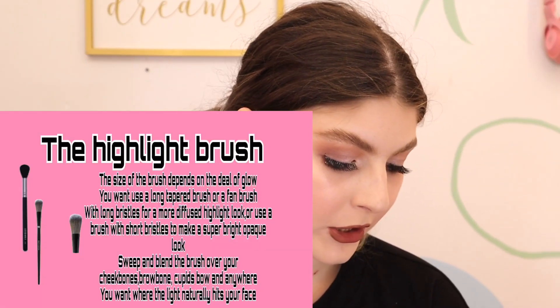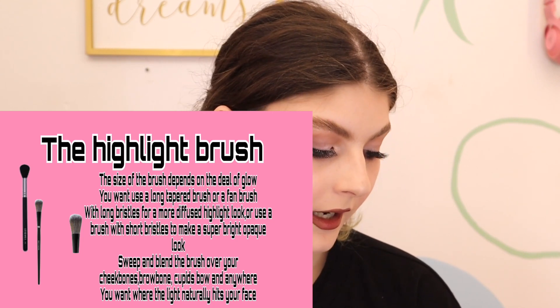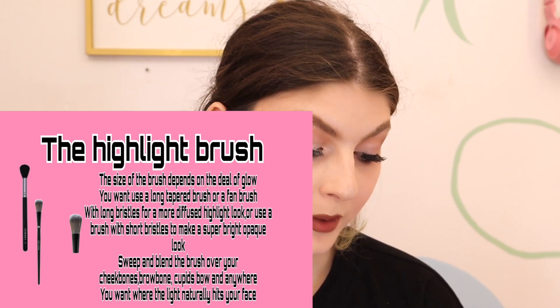The highlight brush — the size depends on the level of glow you want. Use a tapered brush or a fan brush with long bristles for a more diffused highlight, or a brush with short bristles for a super bright highlight. Sweep and blend over your cheekbones, brows, cupid's bow, and anywhere else you want light to naturally hit. I like longer bristle brushes for a dispersed highlight, but when I need a glow to the gods, I use a short packed brush because that density really packs the highlight on for opaque payoff.